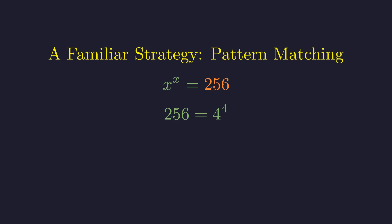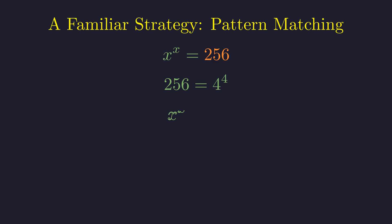The number 256 can be expressed as 4 raised to the fourth power. In this form, the base and the exponent are identical. Substituting this expression back into the equation yields x to the x equals 4 to the 4. By comparing the structure of both sides of the equation, it follows that x must be equal to 4.